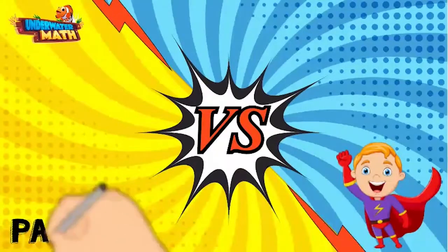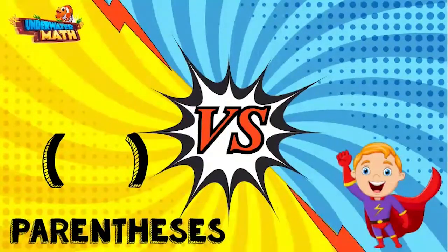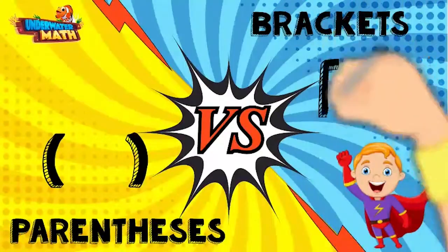First, let's learn what parentheses and brackets are. Parentheses are smooth and curved and look like this. Brackets are square and look like this.